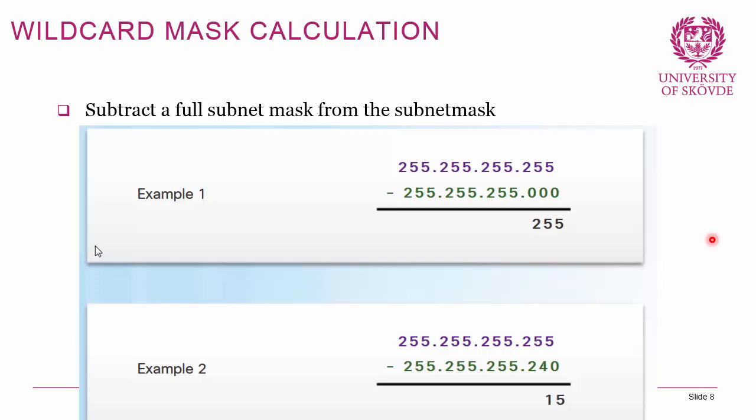A more complex example: if you have a subnet mask of 255.255.255.240, subtracting from the all-ones mask gives 0.0.0.15 as the wildcard mask. There are end-of-chapter tasks for wildcard calculations — make sure you complete them so you really grasp how wildcard masks work, both for ACLs and for upcoming routing protocol topics.